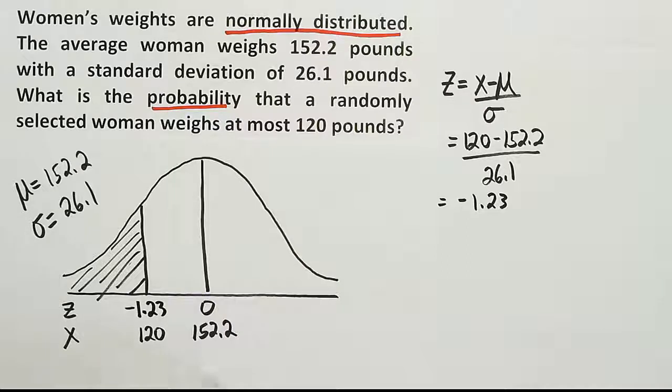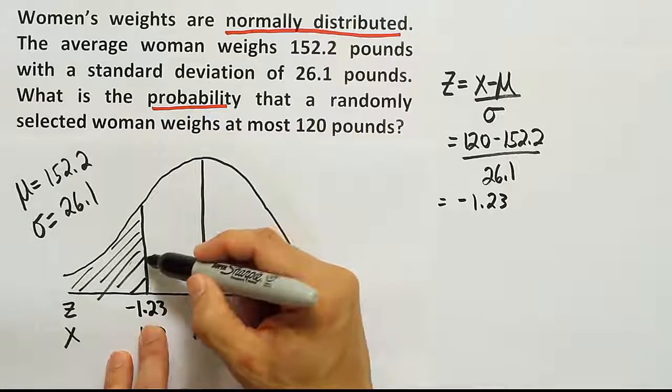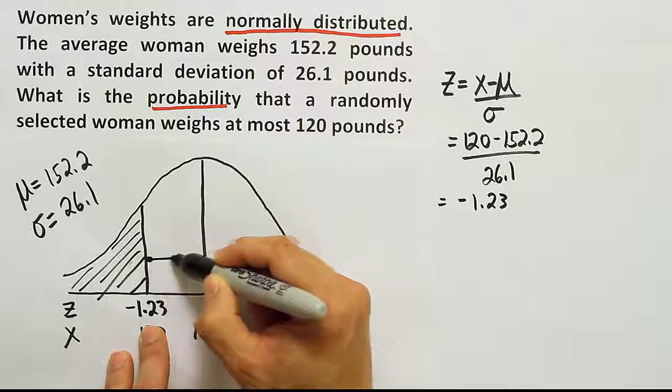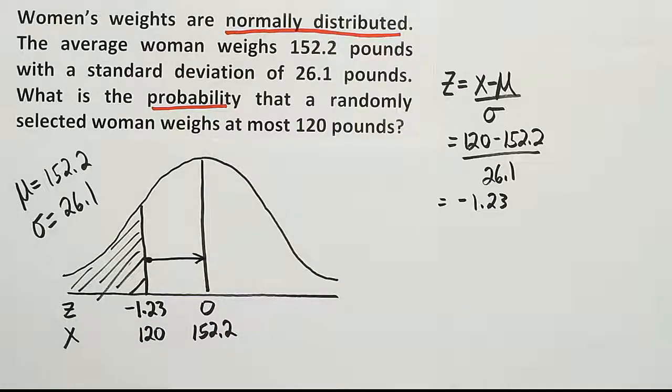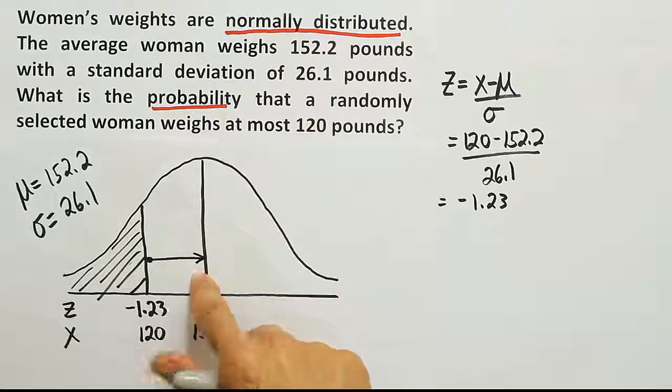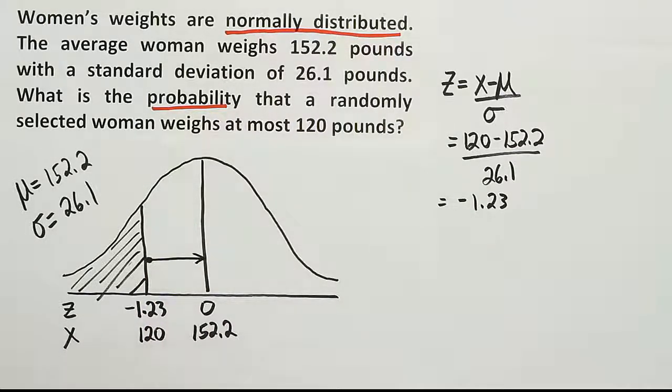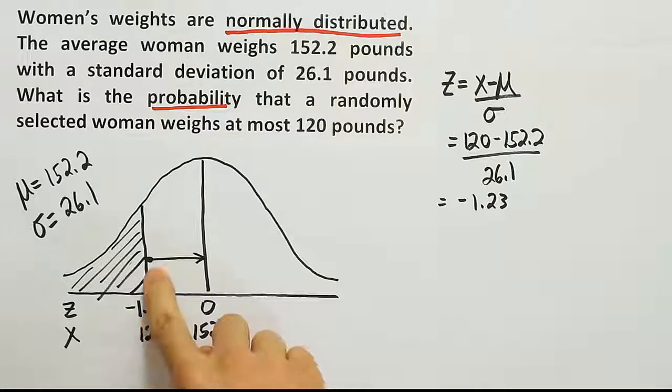Now if we look that number up, let's think about what we'll get. We'll get the area from here to here on the curve. That's not actually what we want, but that's all we can do. We can look up the z-score and get this area - that's the only area the table gives us. Let's go to the z-score table now and look up negative 1.23.